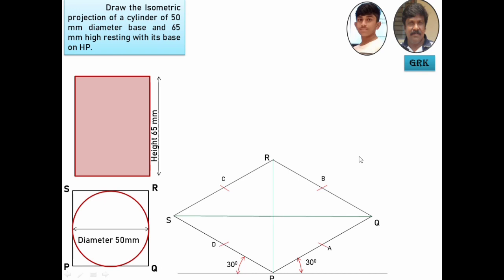Now, consider the shortest diagonal. The shortest diagonal is PR, the longest diagonal is SQ. Consider the shortest diagonal, with P as center, PC or PB as radius, you draw an arc. Now, with R as center, RD or RA as radius, draw an arc.